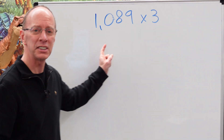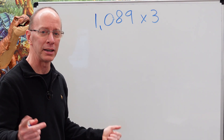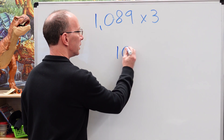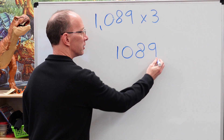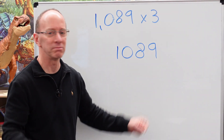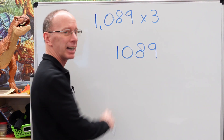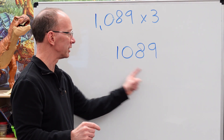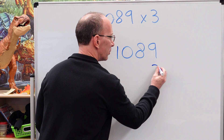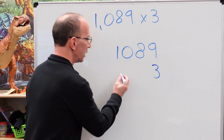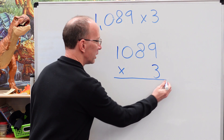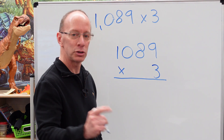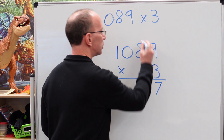Welcome back. When you see a problem like that, what I like to do is rewrite it — makes it a lot easier. So I'm just going to put 1,089. And you're like, whoa, that's a four-digit number. Doesn't matter; I know you can handle it. Times 3 — remember, 3 is in the ones place, so put it right over here with the 9. 9 times 3 is 27, so we put the 7 right here and the 2 up there.